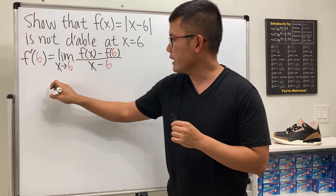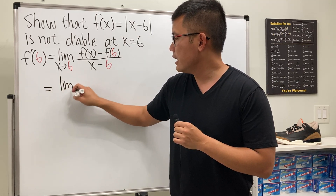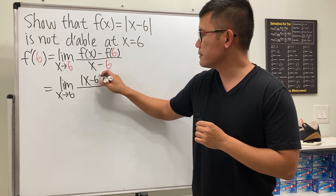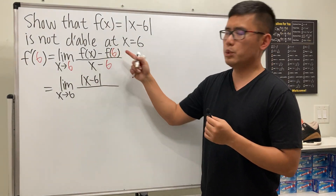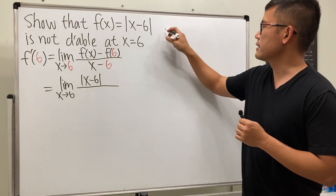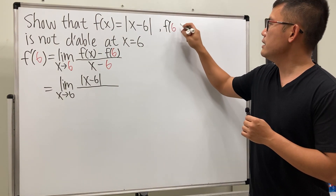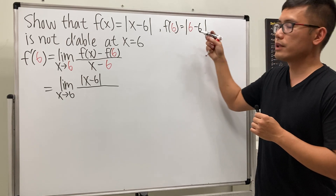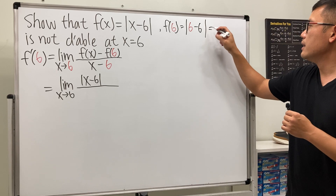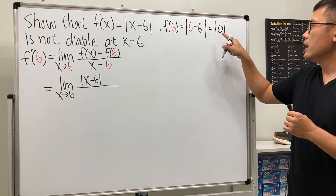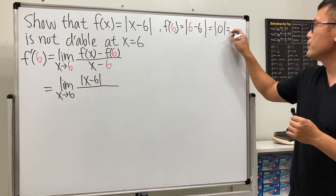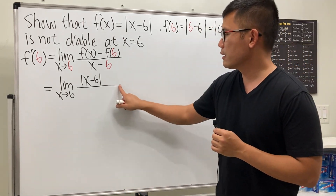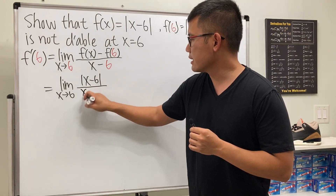The function is the absolute value of x minus 6. Let's also find f of 6 on the side: f of 6 is the absolute value of 6 minus 6, which is the absolute value of 0, which equals 0. So minus 0 doesn't need to be written, and the denominator is just x minus 6.